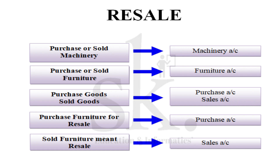We need to understand the reason behind this difference. In the first example, when we purchase or sell furniture used in the business, we use furniture account — debiting furniture account on purchase and crediting furniture account on sale. But when furniture is purchased for the purpose of resale, a different rule applies.